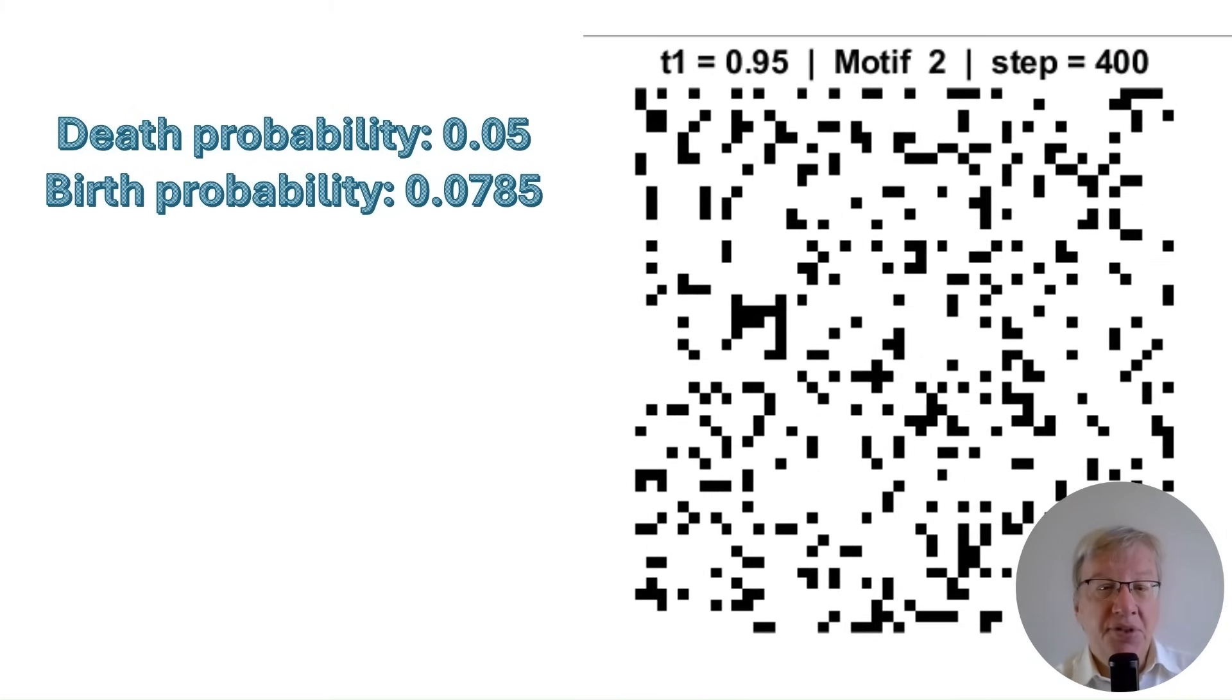Now, if we go to the other extreme and turn the contagion level way down, basically nothing happens. A new motif appears and then vanishes almost immediately. Each motif is almost unique in this regime, but none of them live long enough to matter.